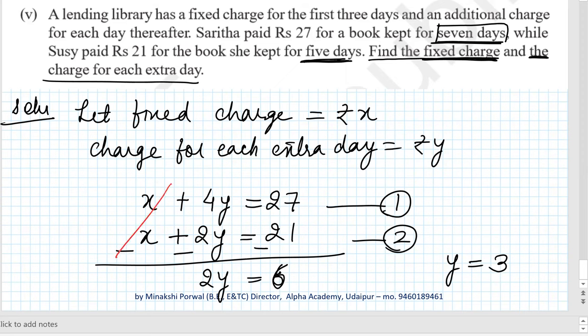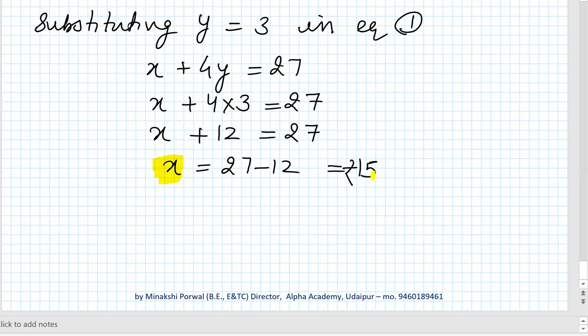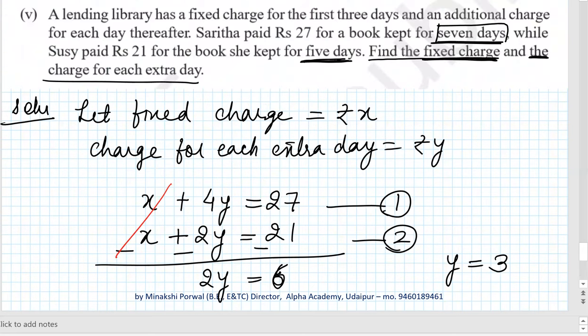y equals 3. Substituting this in equation 1: x plus 4y equals 27. Since y equals 3, we have x plus 4 times 3 equals 27, so x plus 12 equals 27. Therefore x equals 27 minus 12, which equals 15. So the fixed charge is rupees 15 and the charge per day is rupees 3. These are the answers.